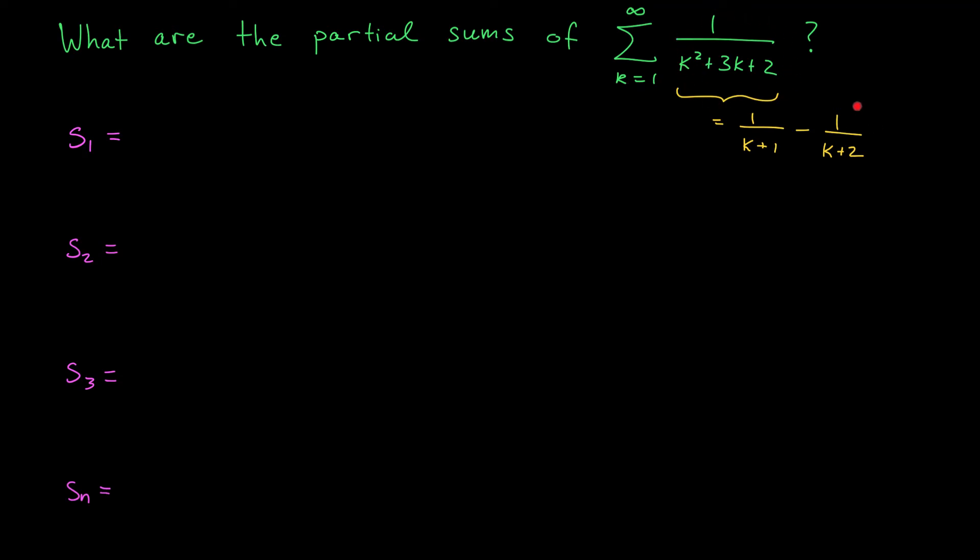We can get that first term by plugging in k equals 1 to the expression you see here. But I'm actually going to use the partial fraction decomposition that we found on the previous slide, because the hint given in the question suggested that maybe this decomposition would be helpful to us. So when I plug in k equals 1, I get 1 over 1 plus 1 minus 1 over 1 plus 2. That's going to give me 1 half minus 1 third. Now, I could simplify this expression, but I'm actually going to leave it as is. And you'll see why momentarily.